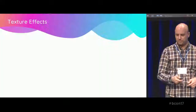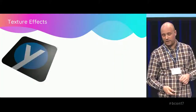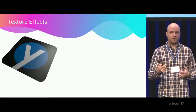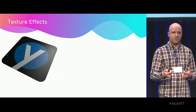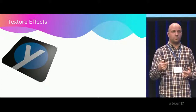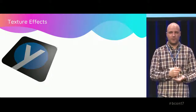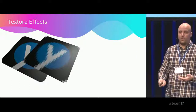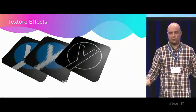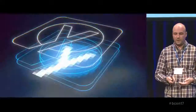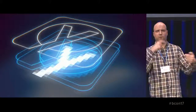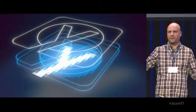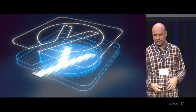Finally, texture effects: we can do things to images in the compositor, but we need to be able to influence textures while they're on a plane or an object. Imagine having a pixelate, find edges, or blur effect directly on a texture — you could easily create something like a logo being drawn pixel by pixel, gaining resolution as it forms.